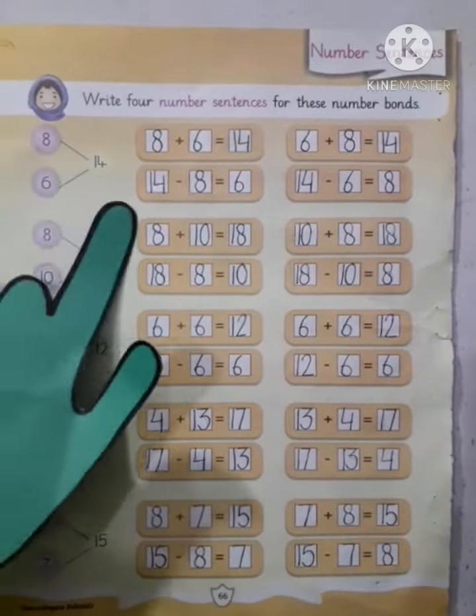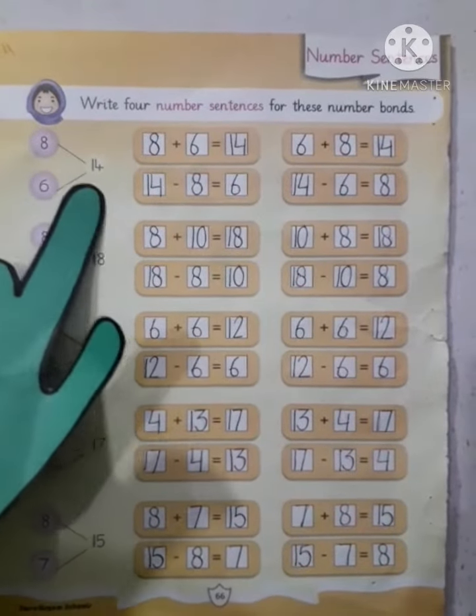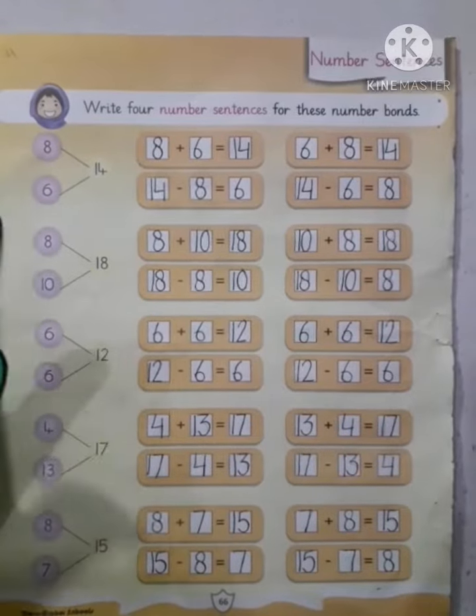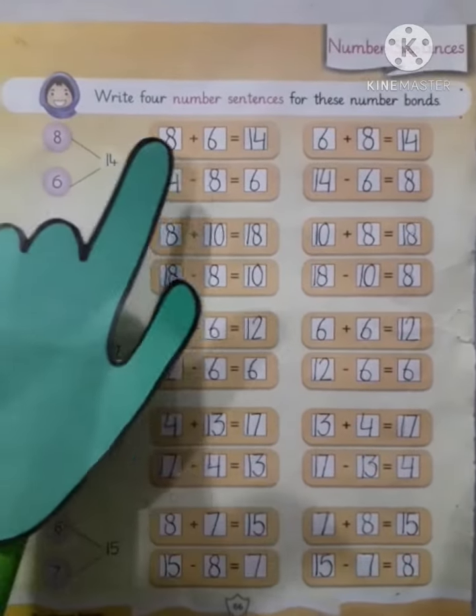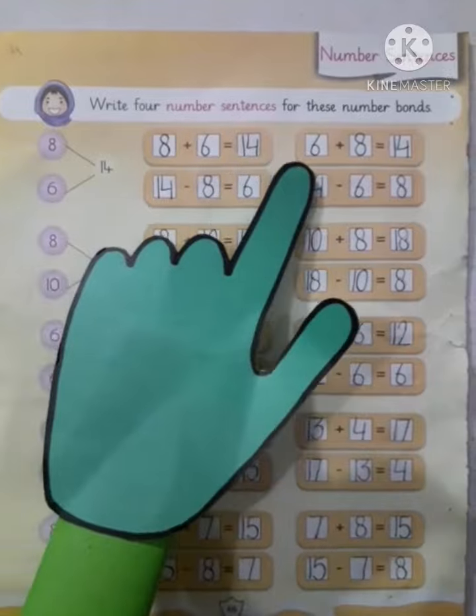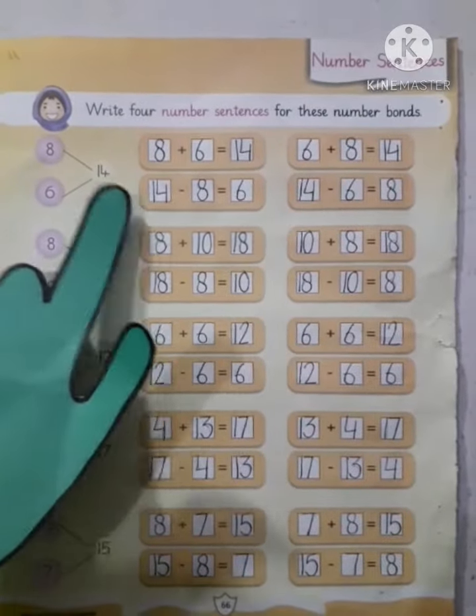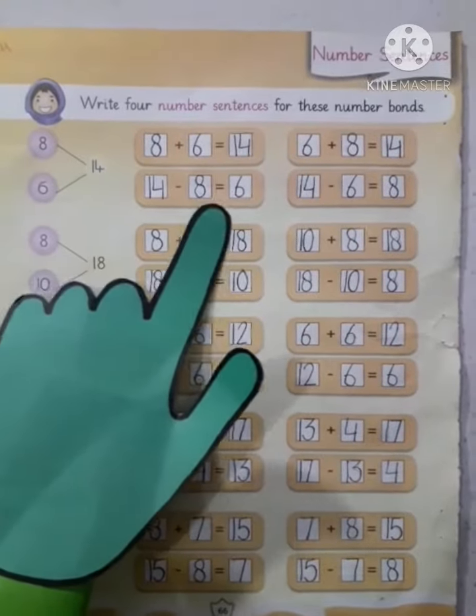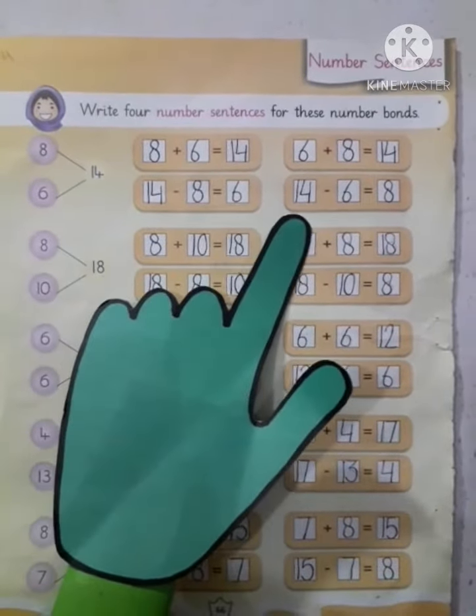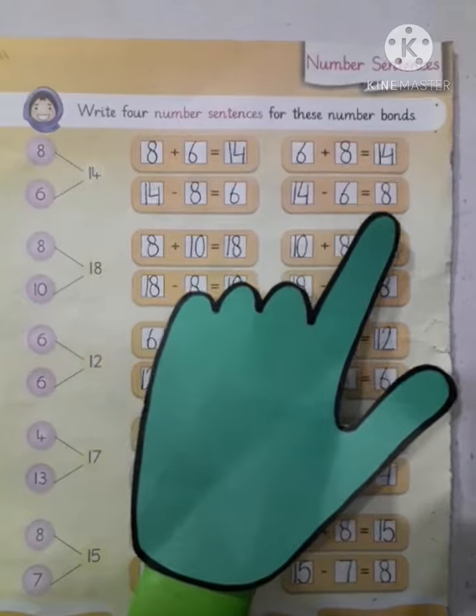First question is 14. The whole number is 14. One part is 8, the other part is 6. 8 plus 6 equals 14, and 6 plus 8 equals 14. Now subtraction: 14 minus 8 equals 6, 14 minus 6 equals 8.